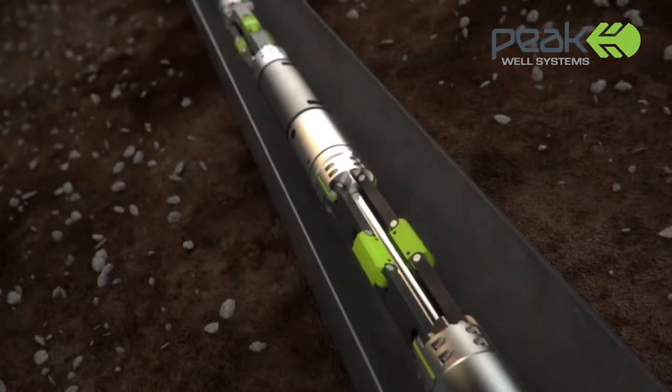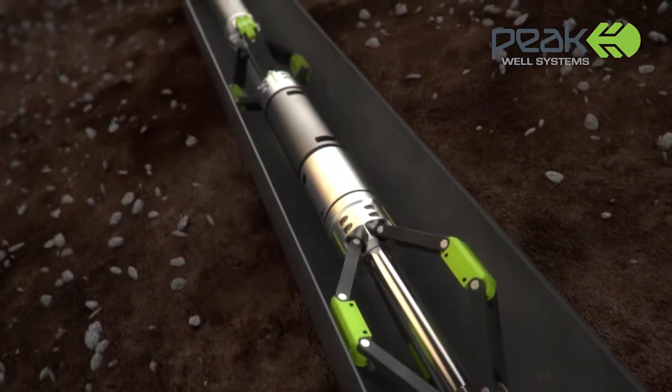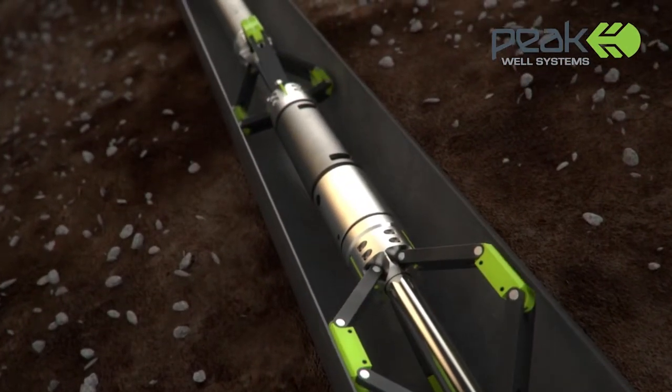At depth, the Peak setting tool activates and sets the Hi-X Gauge Hanger, expanding its arms and centralizing itself in the tubing.